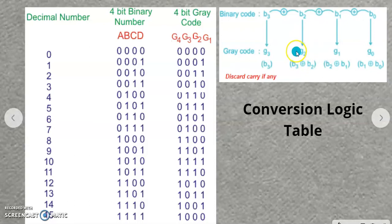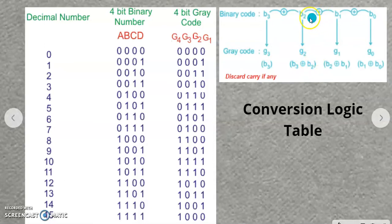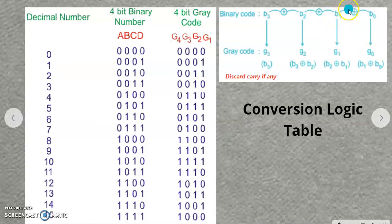If any carry is generated during the addition, we ignore the carry and just write the sum. This gives the second bit of grey. To obtain the next bit, add B2 with B1 to get G1. To get the last grey bit, add B1 with B0. This way we obtain the grey code, writing the sum and ignoring any carry.